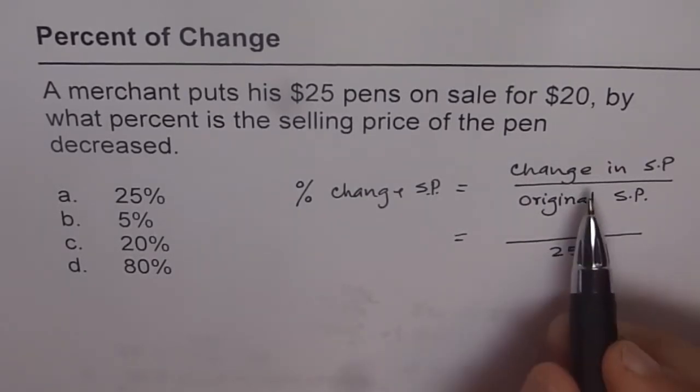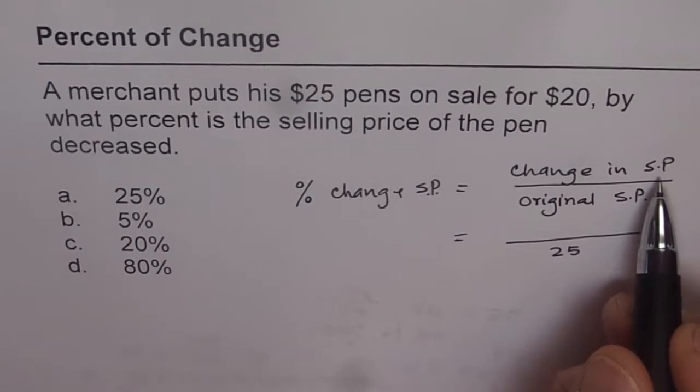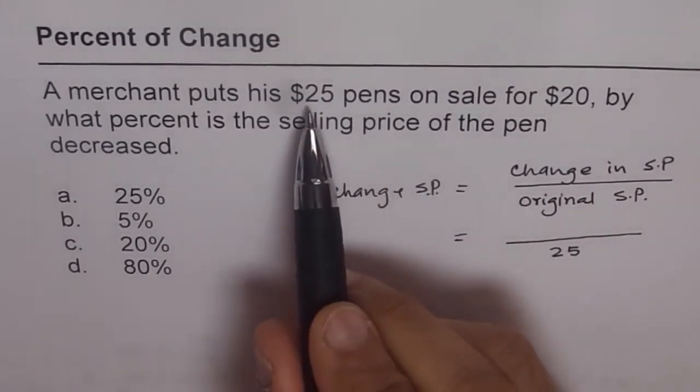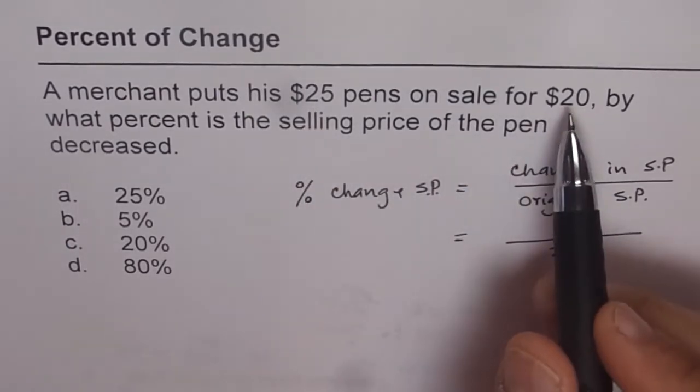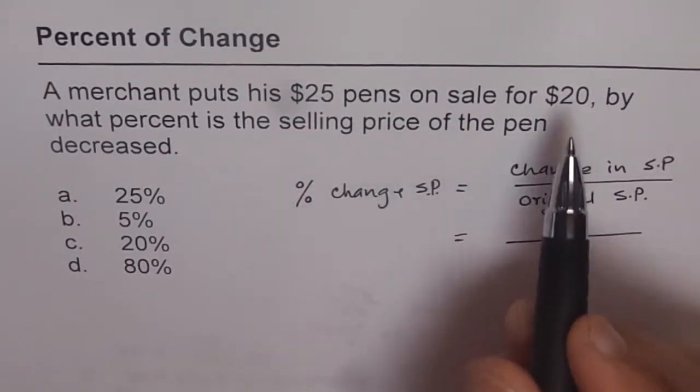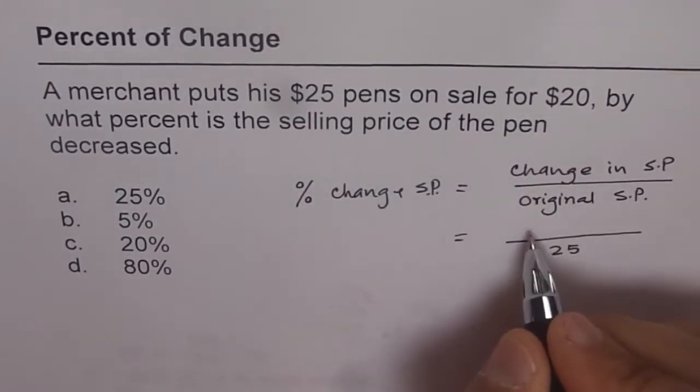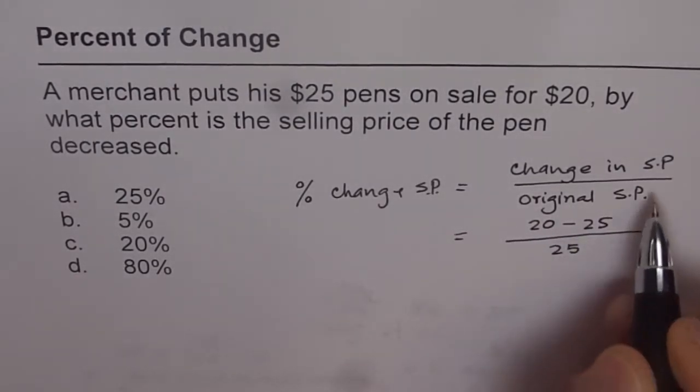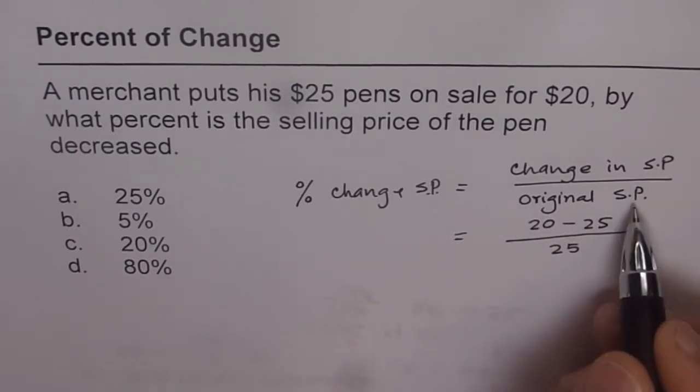And then we will see what is the change in price. So change in price is the original minus final, which is 20 minus 25. So that is the change in price over original price.